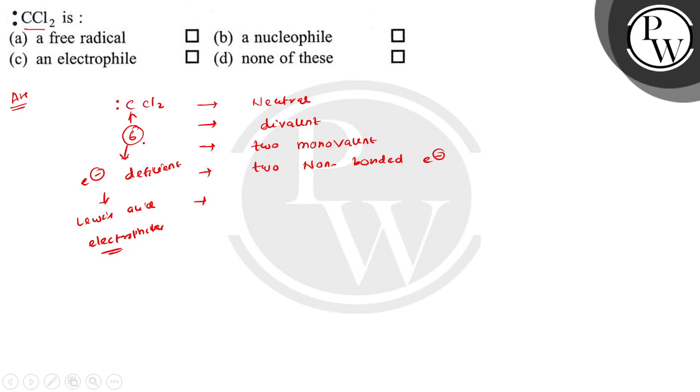So this is the name of this species, dichlorocarbon. The neutral divalent carbon species in which the carbon atom is bonded to two monovalent atoms and there are two non-bonded electrons, these are called carbenes.